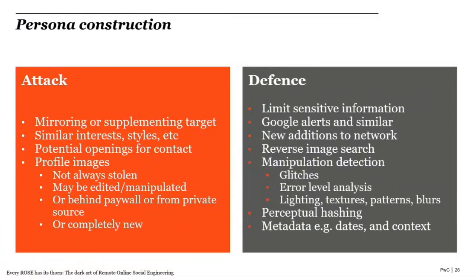The attacker then builds their persona and profile, perhaps by mirroring their target's linguistic style, looking for potential openings for contact, and making the profile look as realistic as possible. For images, historically catfishing campaigns have stolen profile images from genuine social media profiles, but attackers might also edit or manipulate images, get them from behind a paywall, or create completely new ones. Defenders could do a reverse image search, look for evidence of manipulation via error level analysis or glitches, use perceptual hashing as a measure of image similarity, or examine image metadata.